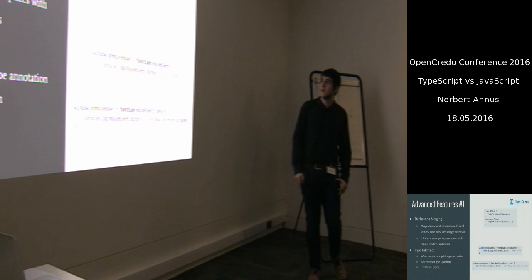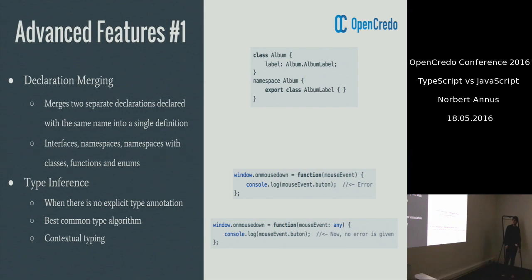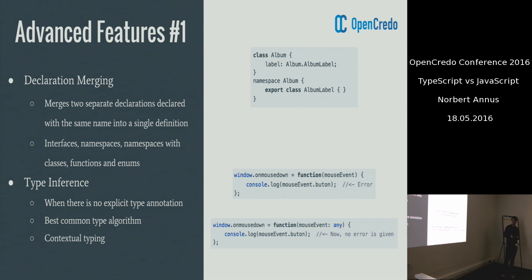Let's talk about the advanced features of the language. We are talking about declaration merging when we are planning to merge together two or more different declarations with the same name into one single definition. This can come in handy if you are planning to merge together multiple interfaces or namespaces.